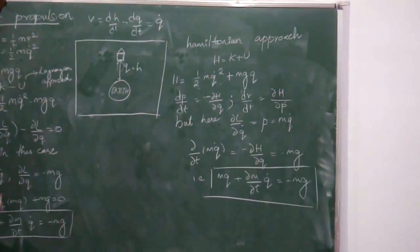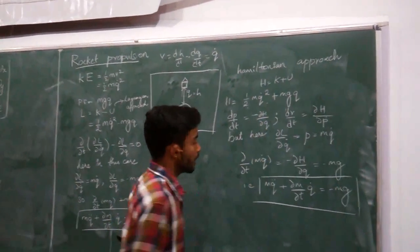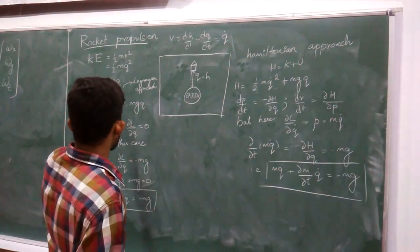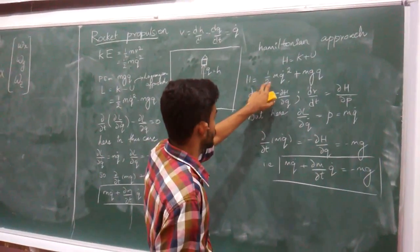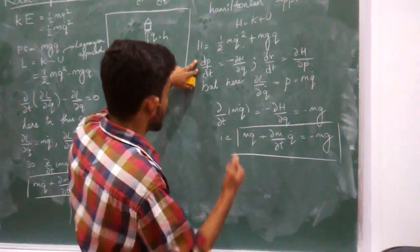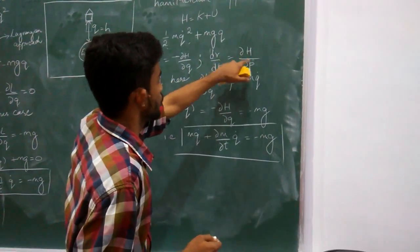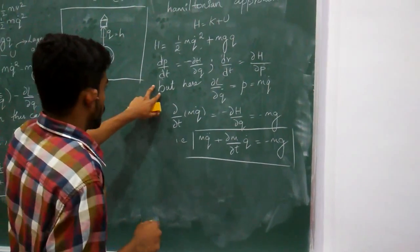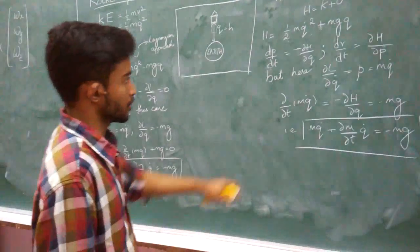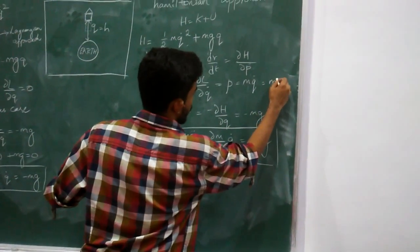Now let us derive the same equation using the Hamiltonian approach. The Hamiltonian of a body is kinetic energy plus potential energy. From the kinetic and potential energy equations, the Hamiltonian of the rocket is H = (1/2)m·q̇² + mgq. From the Hamiltonian equations: dp/dt = -∂H/∂q and dq/dt = ∂H/∂p. Also, ∂L/∂q̇ = p = mq̇, so the momentum of the rocket is p = mq̇.